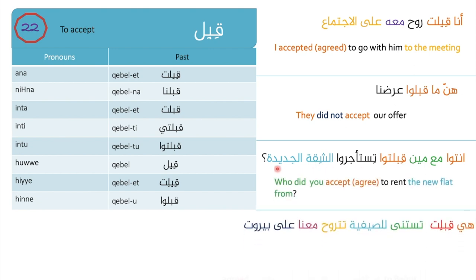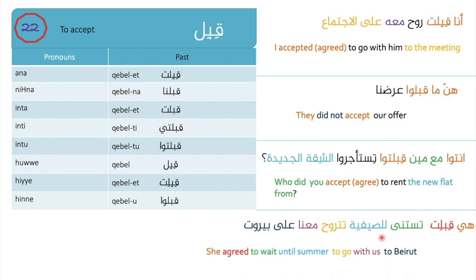Our fourth and final example for 'qabl': 'Hiya iblit testa'na lal-saifiyya testa'ruh ma'ana ala bayroot' — she accepted to wait until the summer to go with us to Beirut. 'Testa'na' means to wait, 'il-saifiyya' means the summer, 'testa'ruh' means to go, 'ma'ana' means with us, 'ala bayroot' means to Beirut.